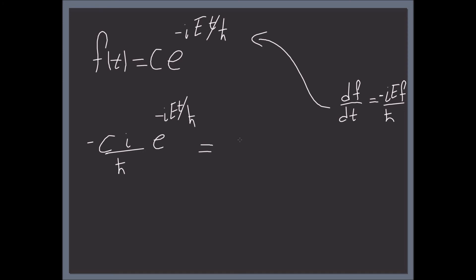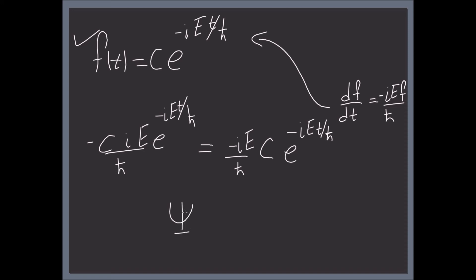Let's verify: the right-hand side gives −(iE/ħ) times the function itself, which is C·e^(−iEt/ħ). There you have it — this solution satisfies the equation, so it's a good solution and we'll take it. Recalling that we assumed Ψ(x,t) = ψ(x)·F(t), we now know F(t) = e^(−iEt/ħ), so Ψ(x,t) = ψ(x)·e^(−iEt/ħ). We can absorb the constant C into ψ.